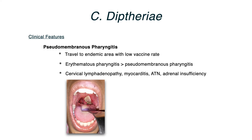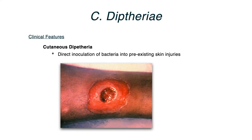For completeness, there is also cutaneous diphtheria. The bacteria directly contacts a pre-existing skin injury — the patient will have a skin lesion before exposure — and diphtheria enters that pre-existing wound, causing nasty-looking ulceration. Just like the pseudomembrane in the throat, these ulcers can have a grayish scaliness over them. Gray can appear both in the throat and on the skin ulcer.